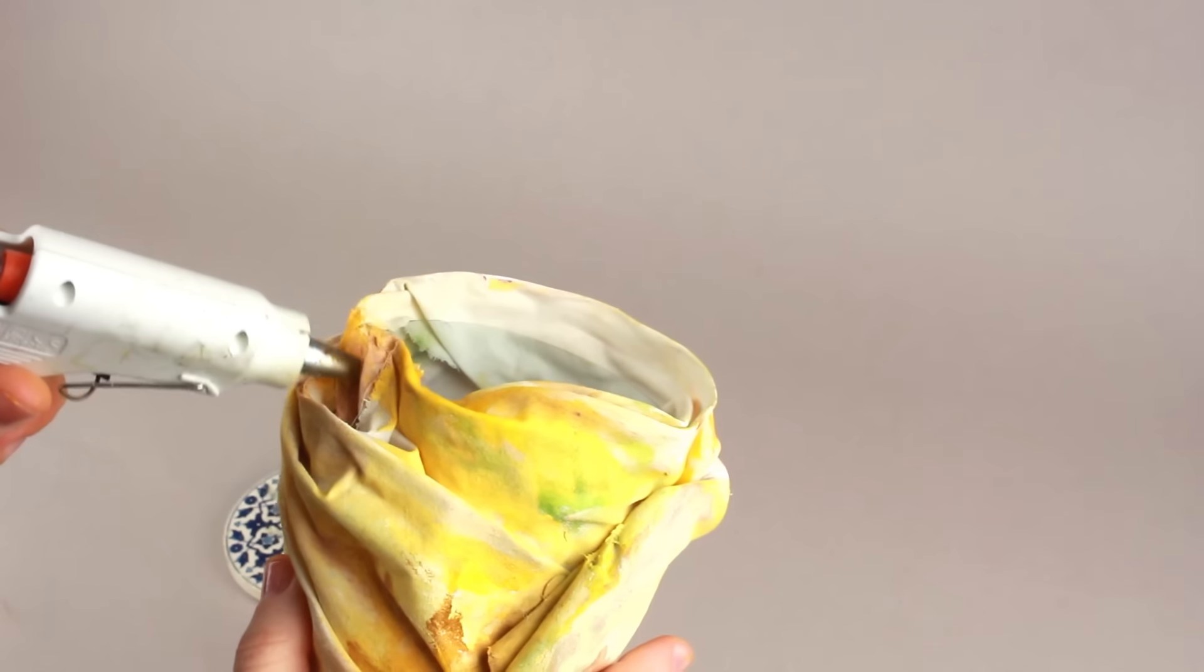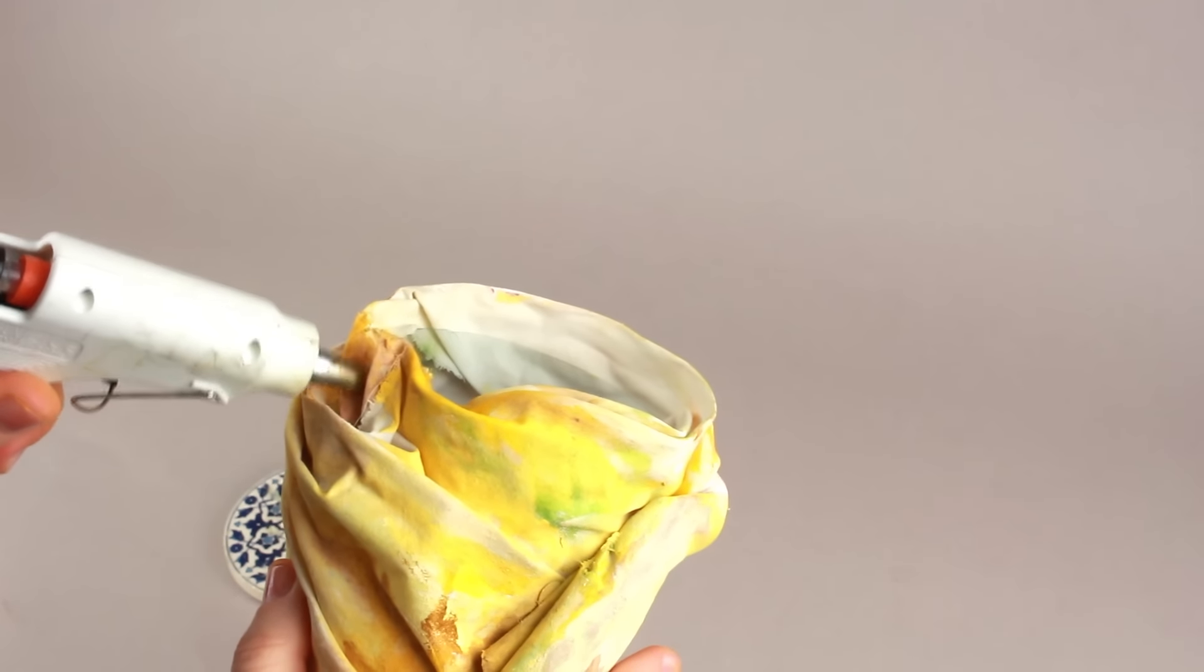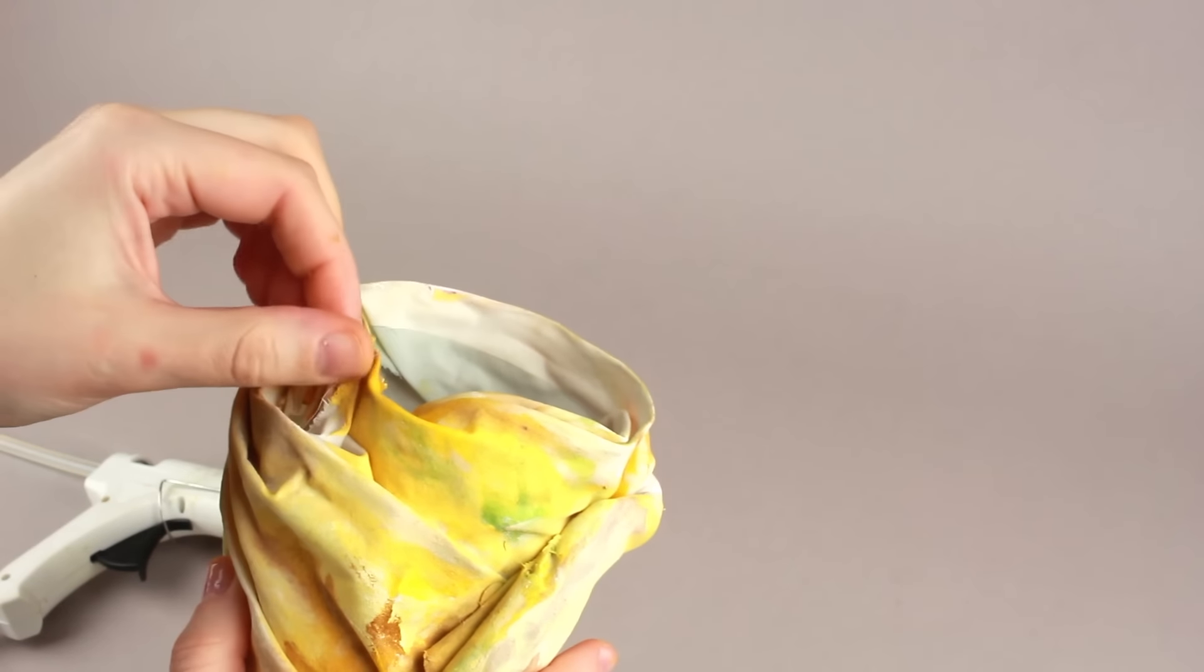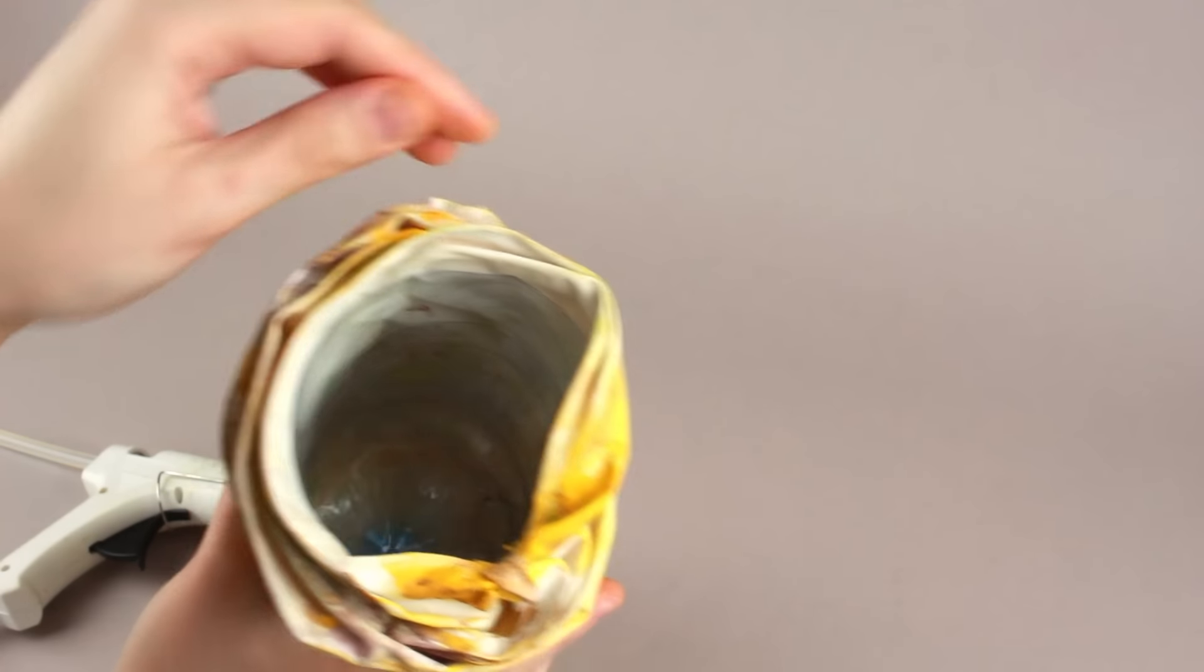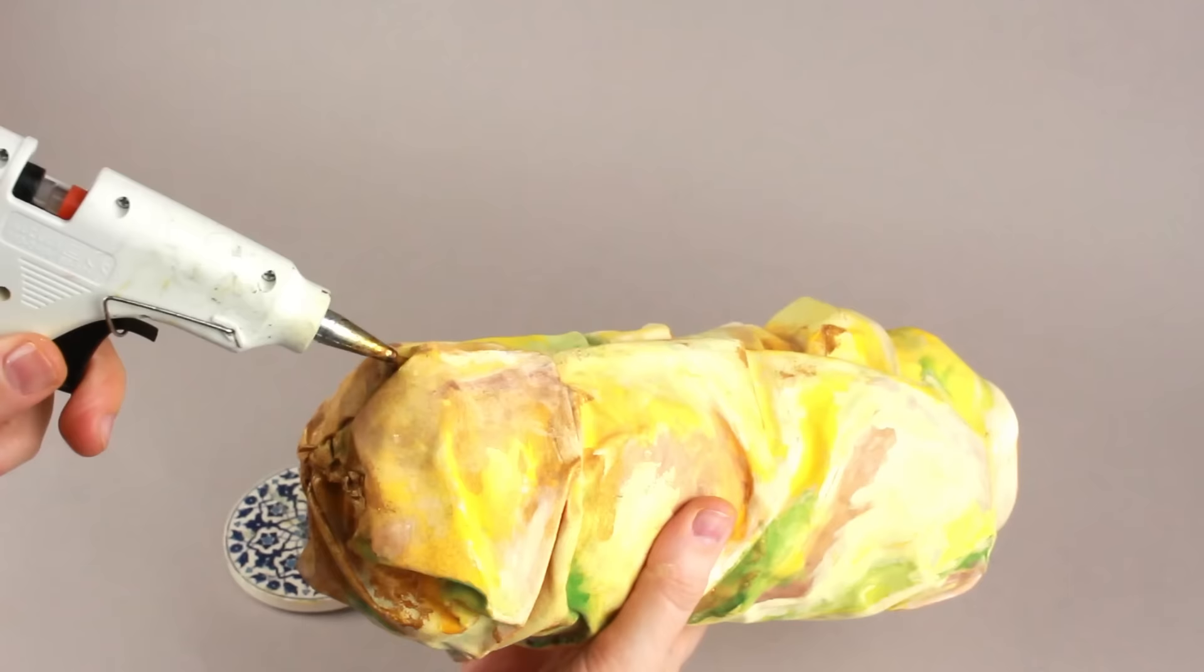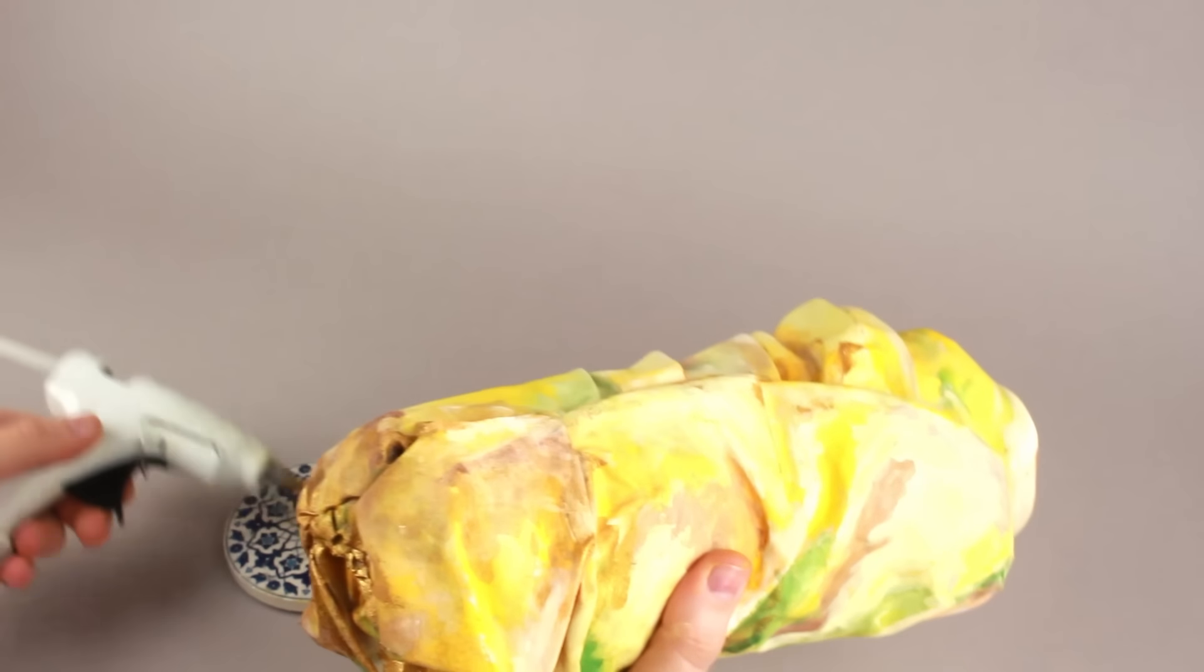Hot glue the unattached details. This fabric vase will look like a ceramic one when ready.